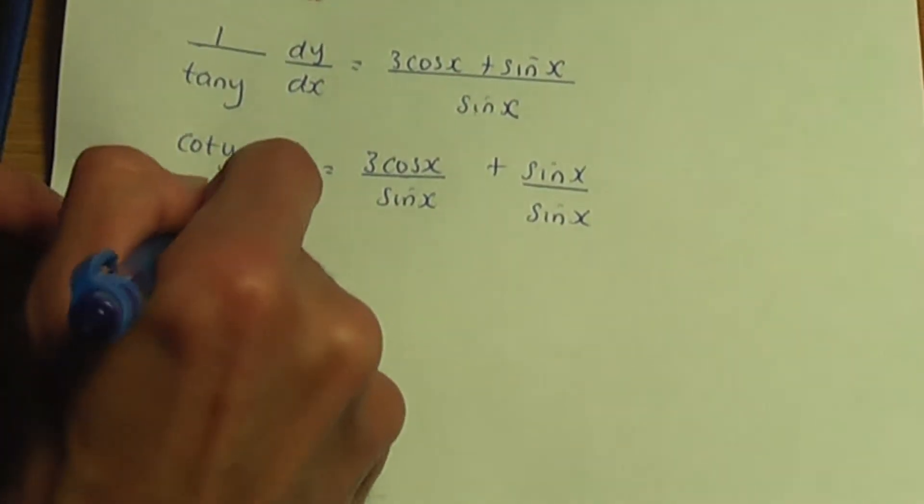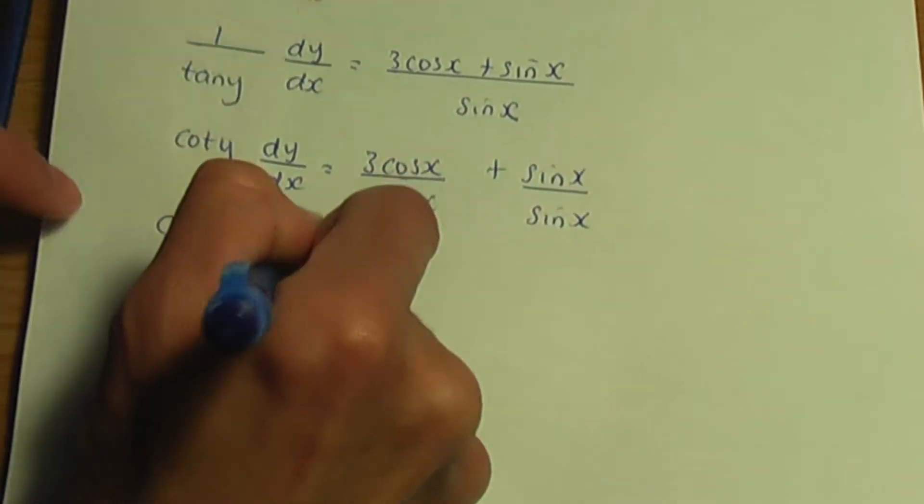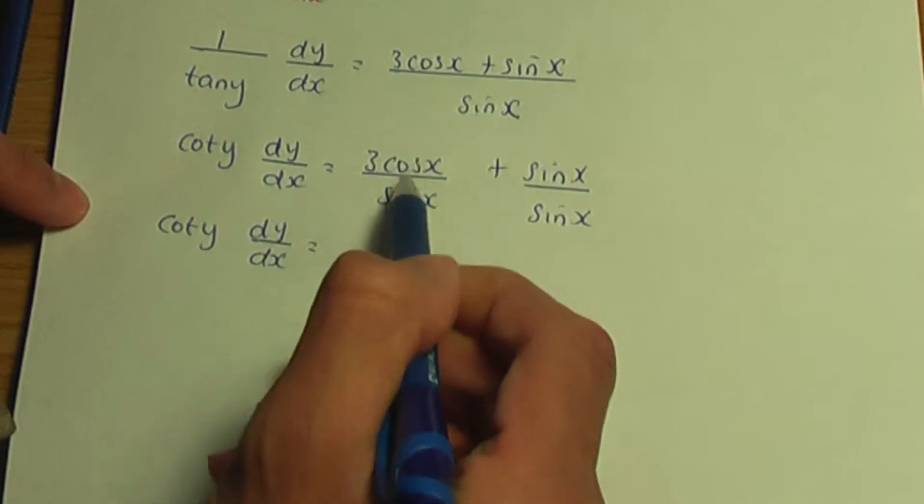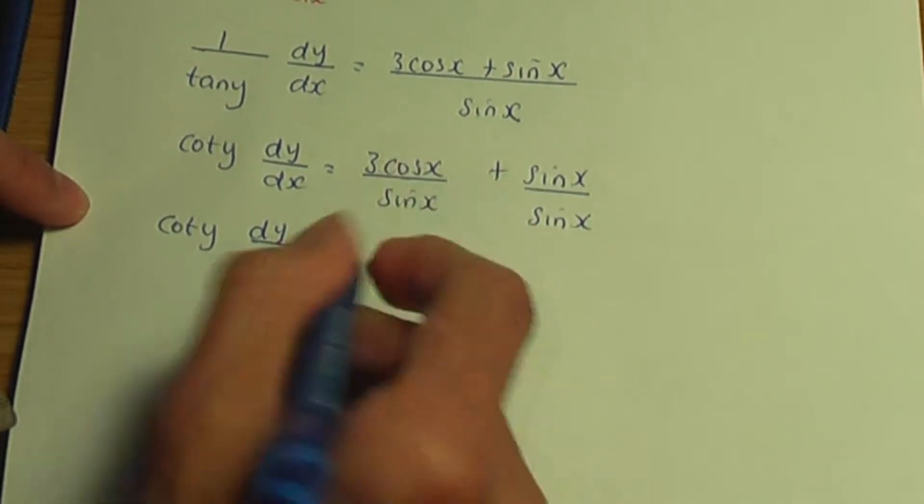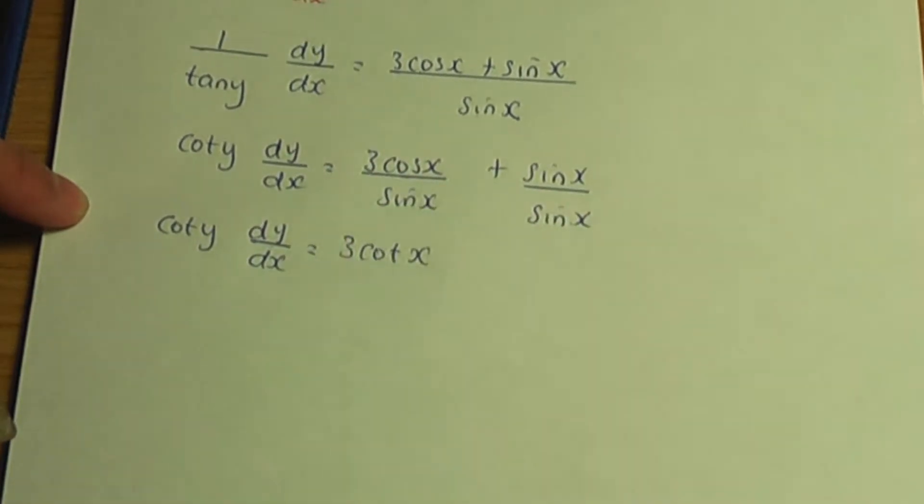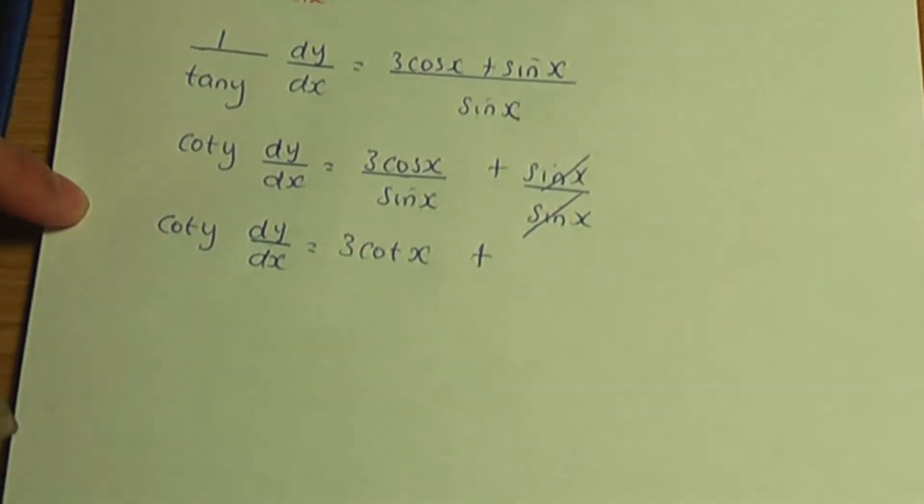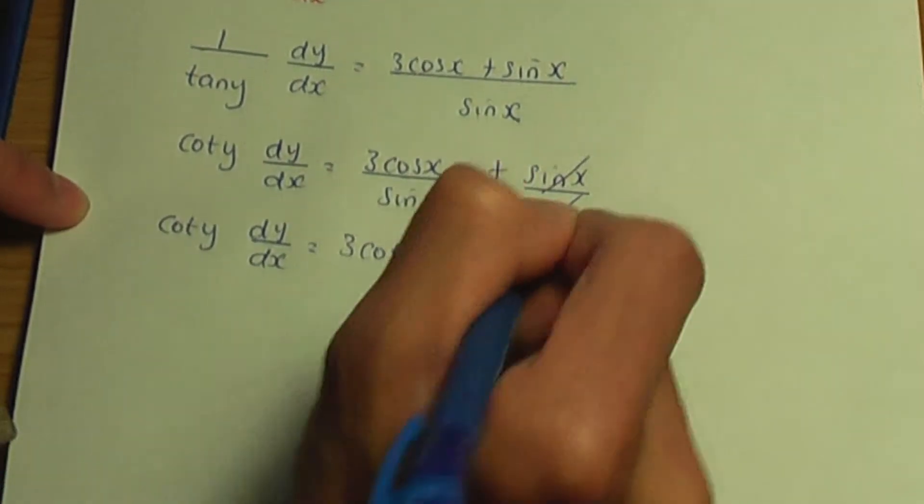So by doing this, the left-hand term is cot y dy over dx. But remember, cos x over sin x is cot x. So I'll have 3 cot x plus, and I can cancel the sin x term up and down to leave me with 1.